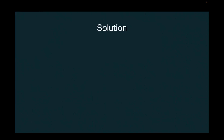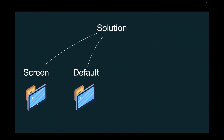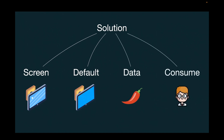If we focus on this solution, we find that it consists of four parts. The first is the screen itself. The second is the default value — the default value for the order type was an empty screen, describing the order as regular, not spicy. The third part is the data that I provide so you know the order is regular or spicy. The fourth is consuming this data — looking at the screen to know if the order is spicy or regular. Please focus on these four parts; we're going to use them in the coding part.